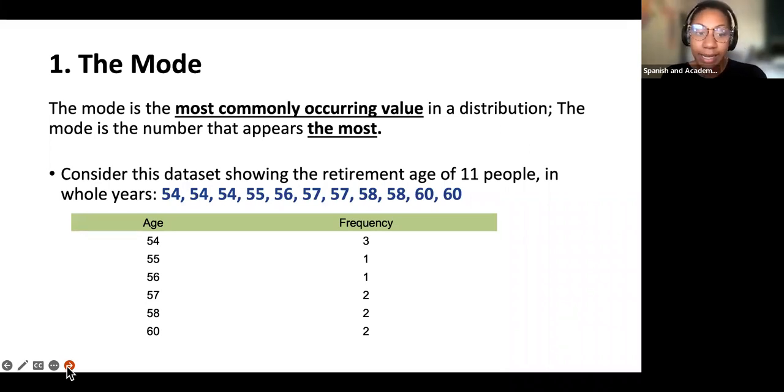Let's look at this dataset. Consider this dataset showing the retirement age of 11 people in whole years: 54, 54, 54, 55, 56, 57, 57, 58, 58, 60, 60. The most frequently occurring number here in this dataset is 54. So that means the mode or the modal group of this dataset is 54. This could be an example test question you could see with a set of numbers and asking you to identify the mode, or you might be asked to define the mode. So it's important to know the application of the term as well as the definition.